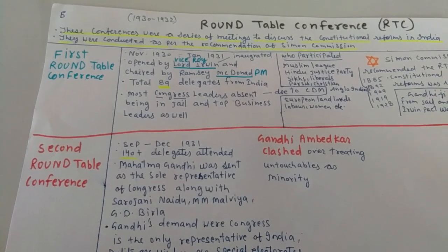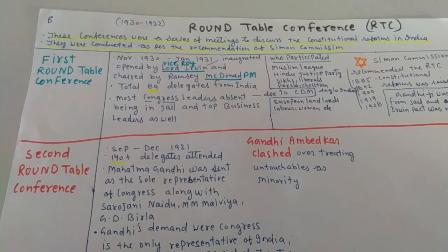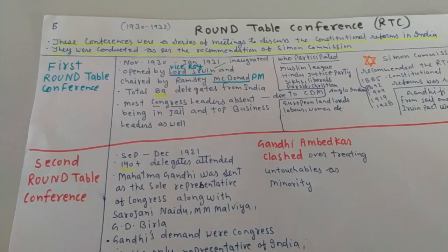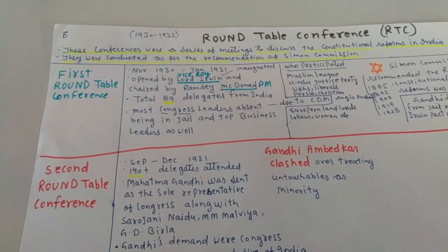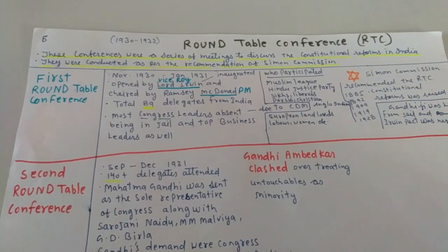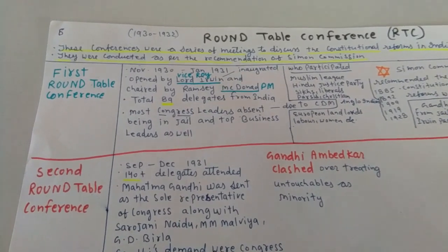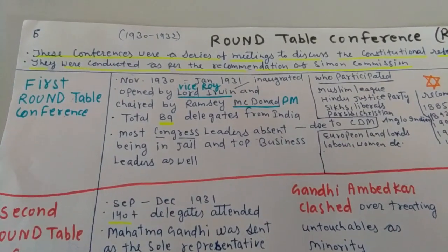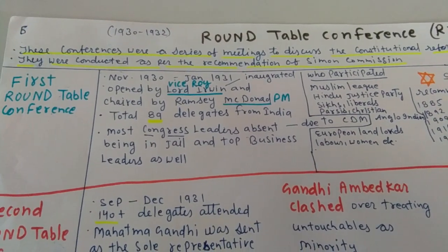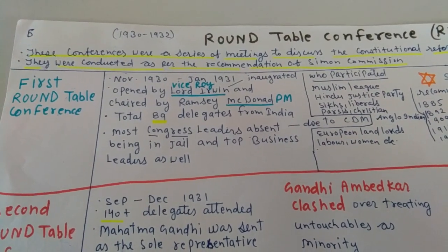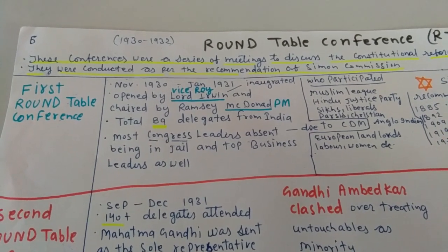Today we will discuss the topic in the lesson: Nationalism in India - Roundtable Conference. This roundtable conference put a series of meetings to discuss the constitutional reform in India. They were conducted as per the recommendation of the Simon Commission, which was set up to discuss the constitution of India.